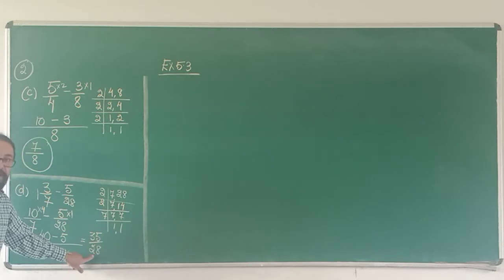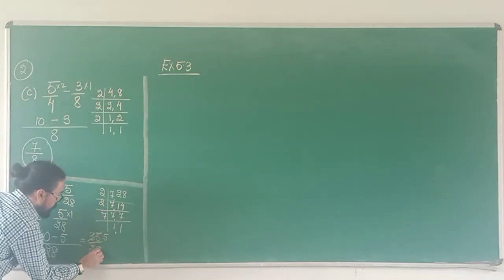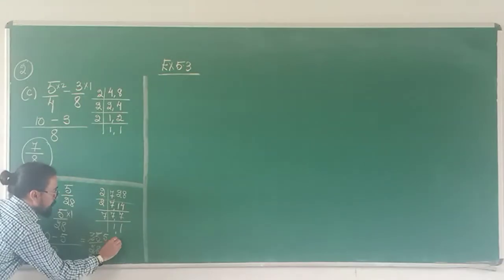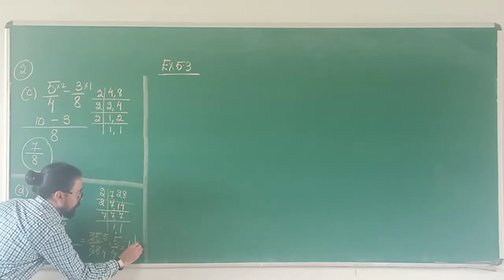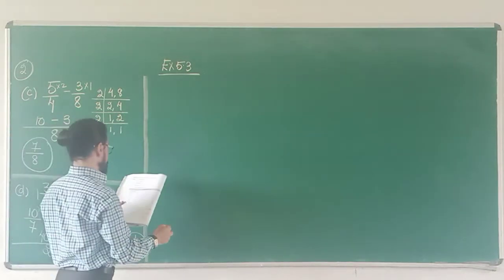Next 7. Will 7 divide both? Yes. 7 5's are 35, 7 4's are 28. Now this 5 upon 4 can be converted into a mixed fraction. 4 goes into 5 once, remainder 1. So my answer 1 1 upon 4. Let's go to part E.